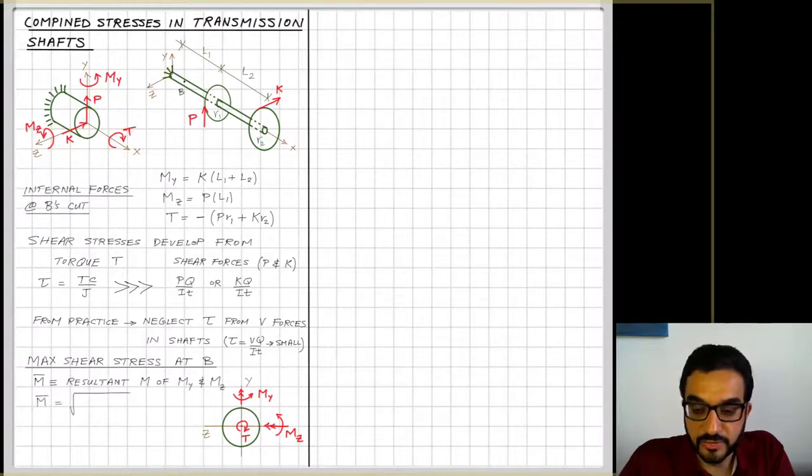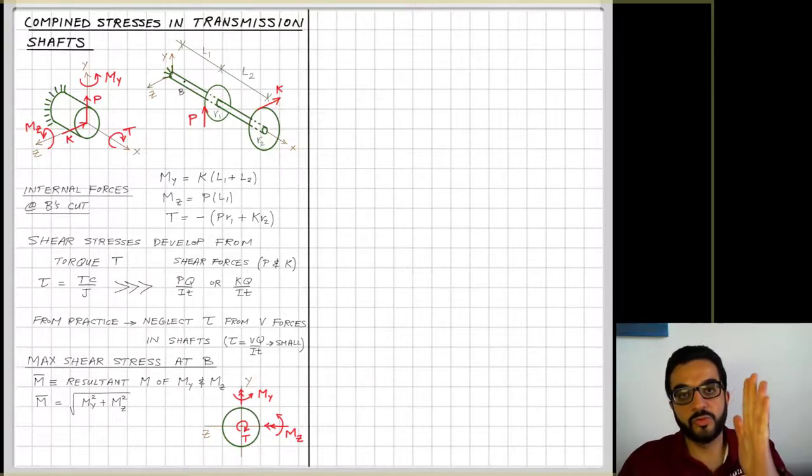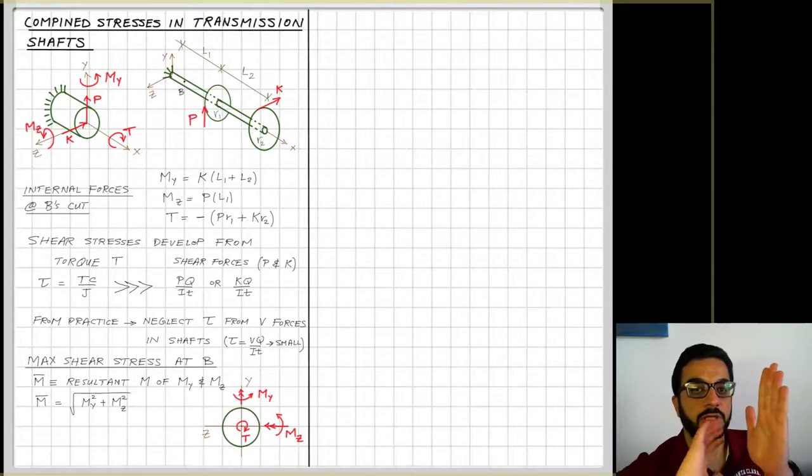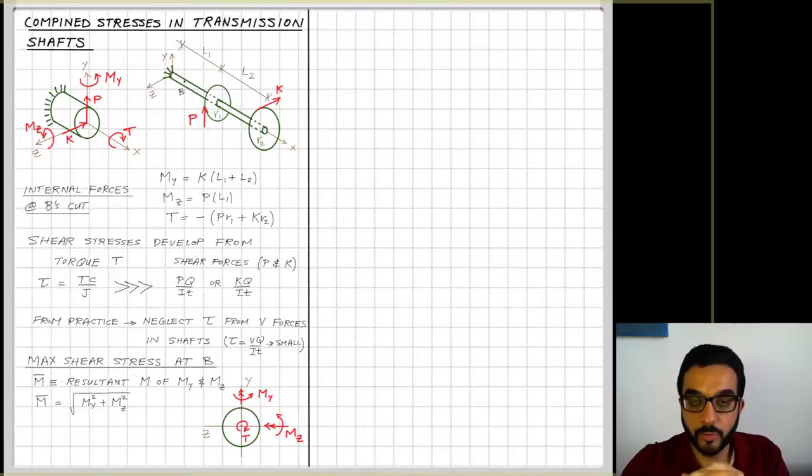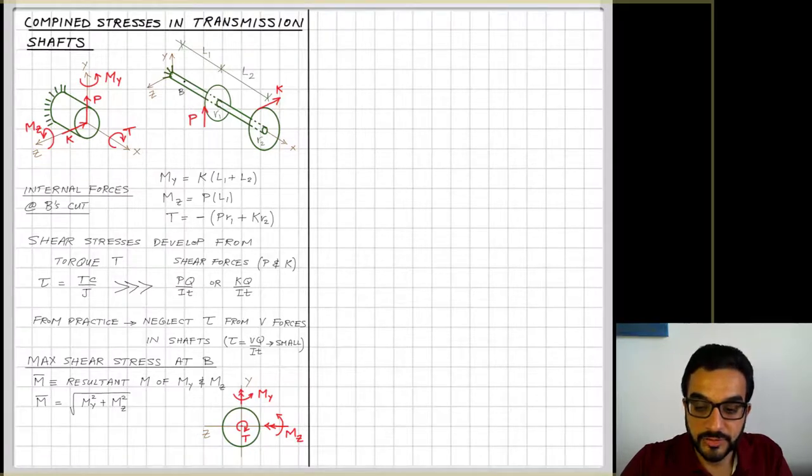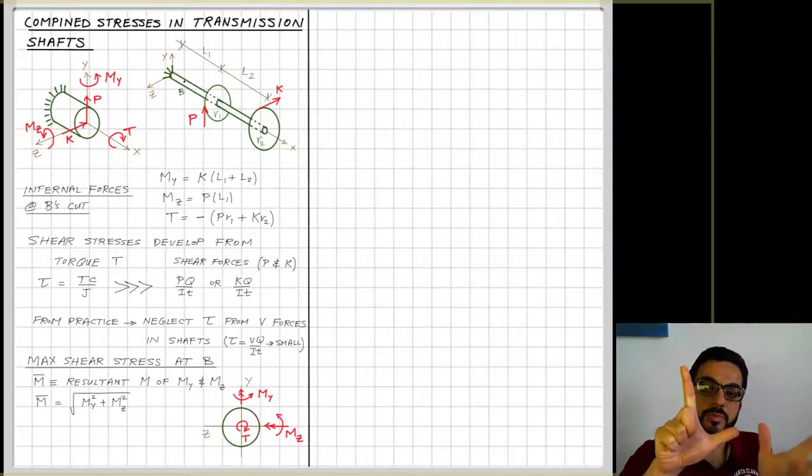So knowing now that, using what we learned in statics, I can actually get the resultant of these two moments. So if there is a moment going like this and a moment like that, so there is a moment resultant for both of them. I can figure out the direction using the vectors, the double-headed vectors that I have here. So if My is going positive y and Mz is going positive z, then the resultant will be in between.